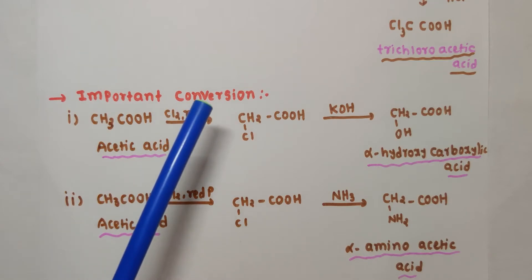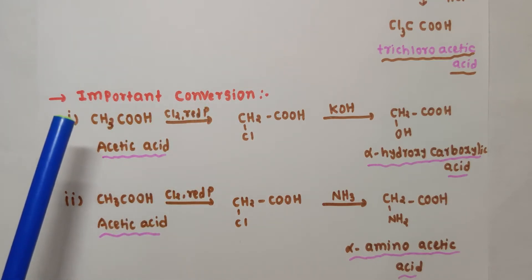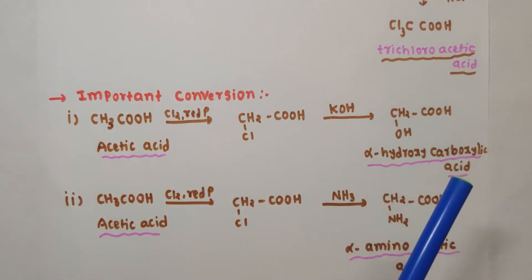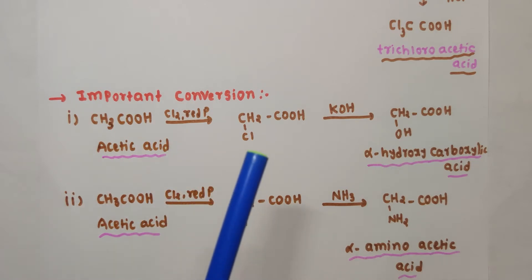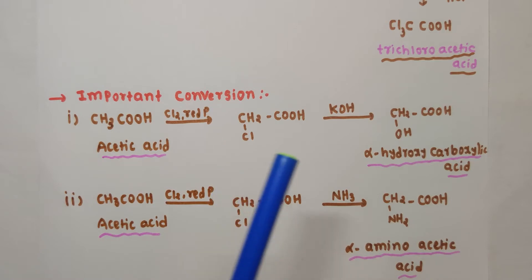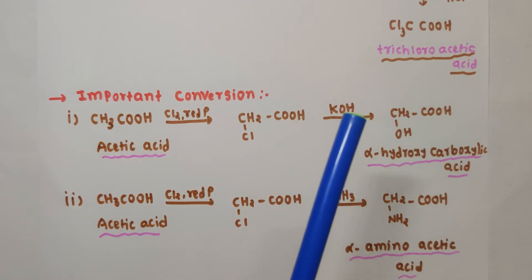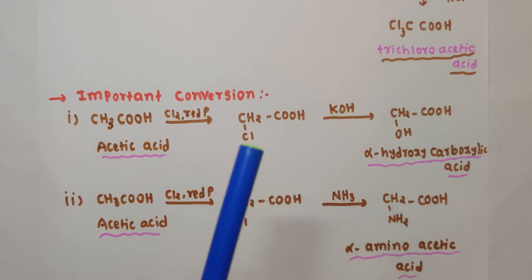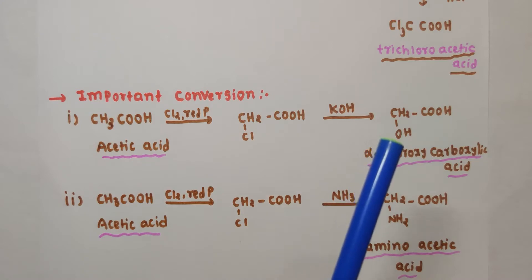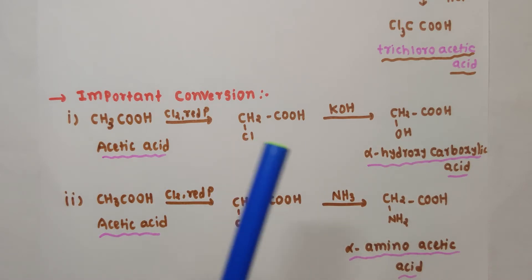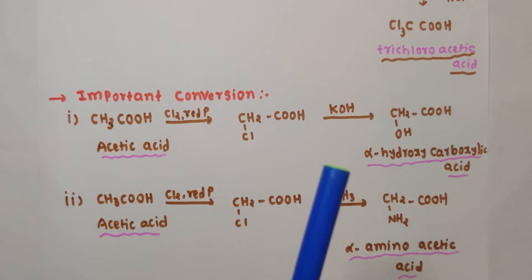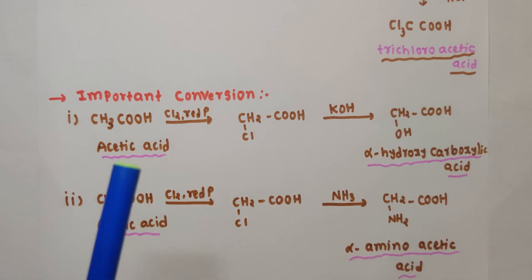An important conversion based on HVZ reaction: to prepare alpha-hydroxy carboxylic acid, first do the HVZ reaction on acetic acid to get monochloroacetic acid. Then react monochloroacetic acid with aqueous KOH — this is a nucleophilic substitution reaction where Cl⁻ is replaced by OH⁻. KCl is eliminated and you are left with HOCH2COOH — alpha-hydroxy acetic acid.